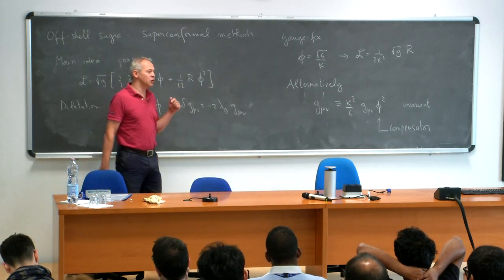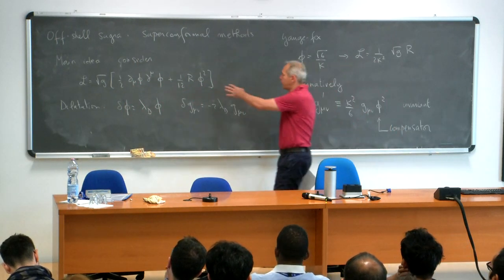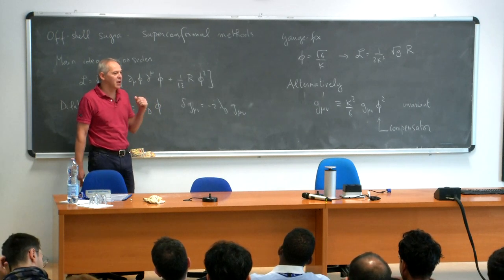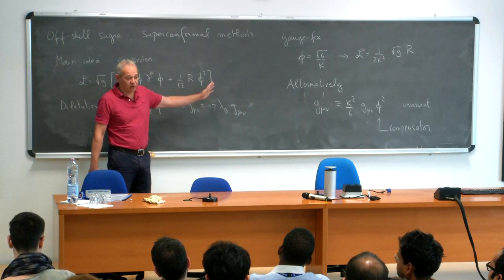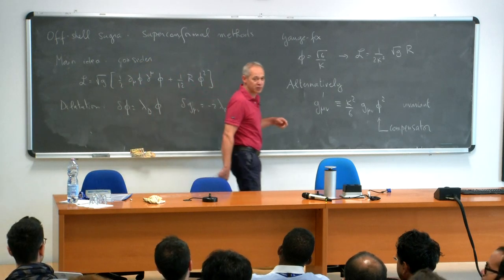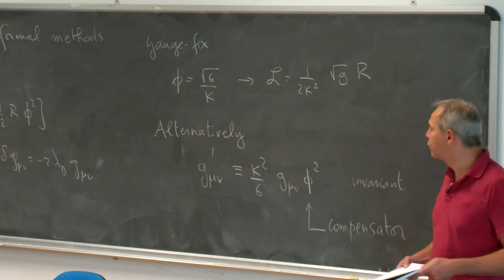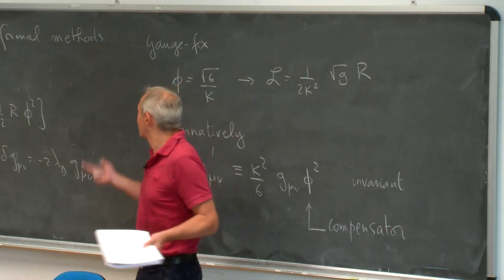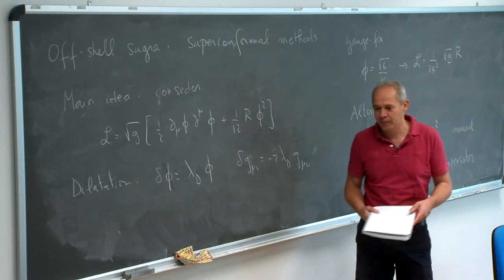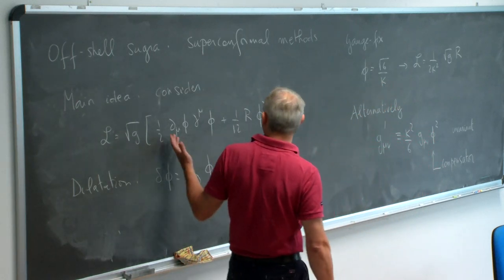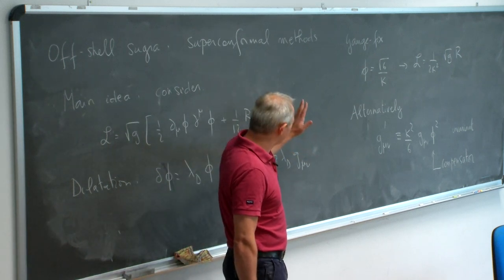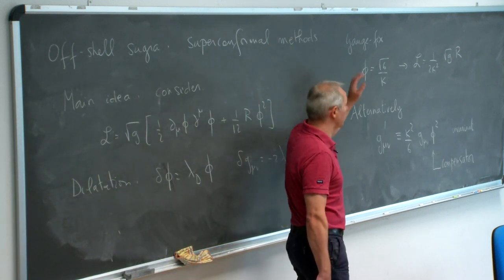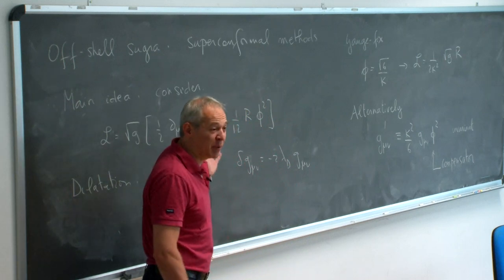This is a simple trick to make actions invariant under scale transformations. If you have a theory not invariant under scale transformations, you can make it invariant — at least classically — by introducing compensators with the right scaling weight. I'm not talking about conformal gravity based on the Weyl tensor squared, which is a higher-derivative theory. I will not include any higher derivatives in my lectures here. This is the main idea of the superconformal method.